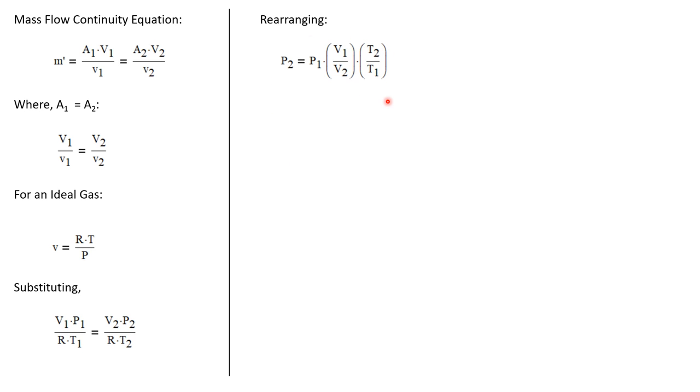Let's rearrange that and solve for P2, which is our only unknown. We know that that's just the pressure at one times the ratio of velocity one over two times the ratio of temperatures two over one.